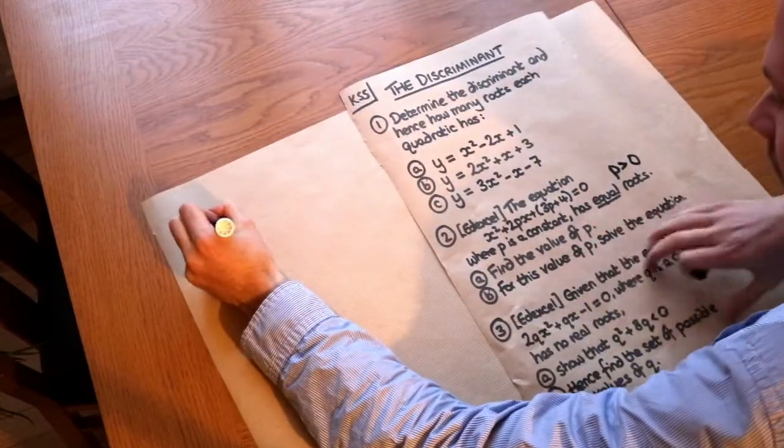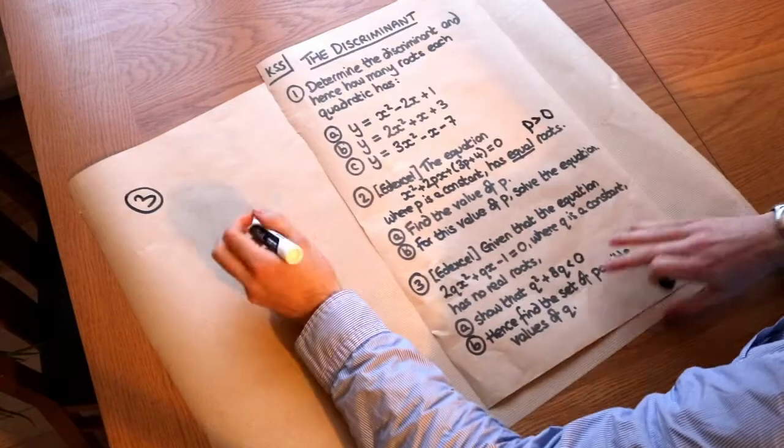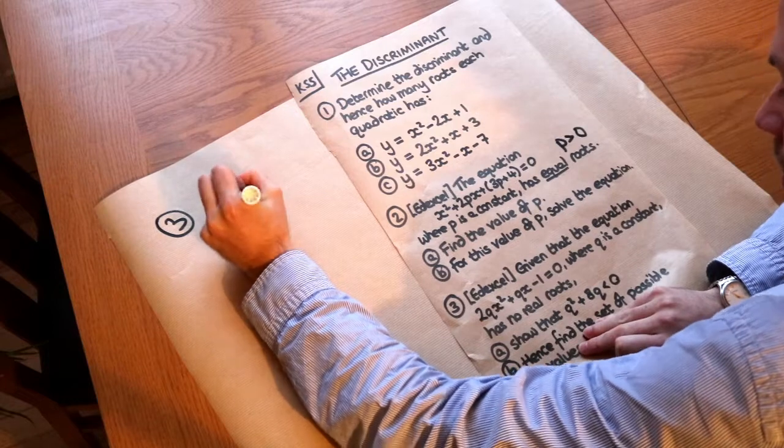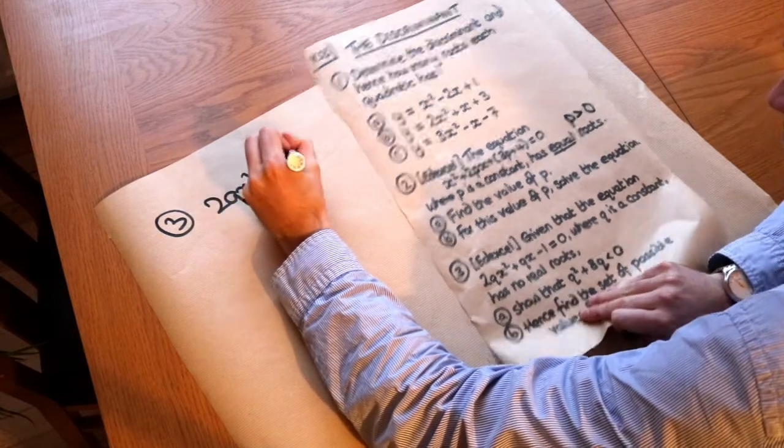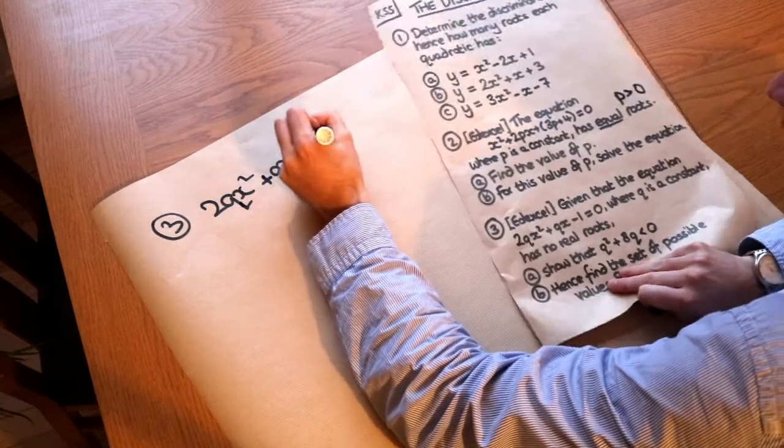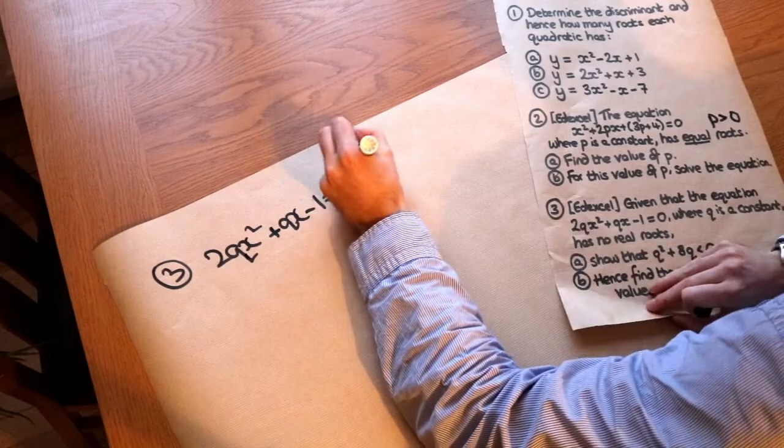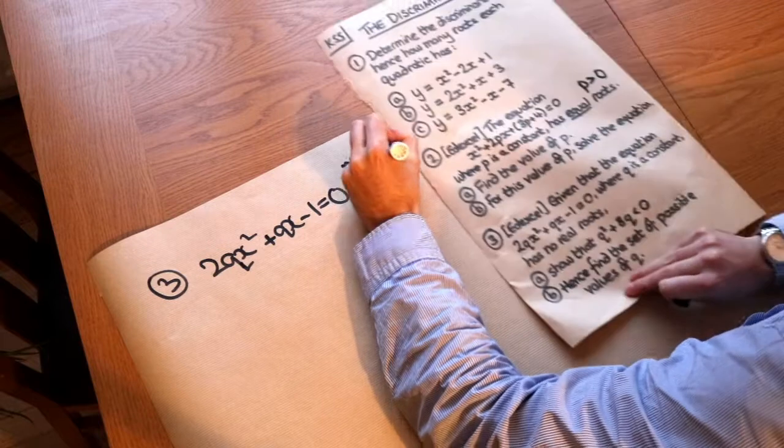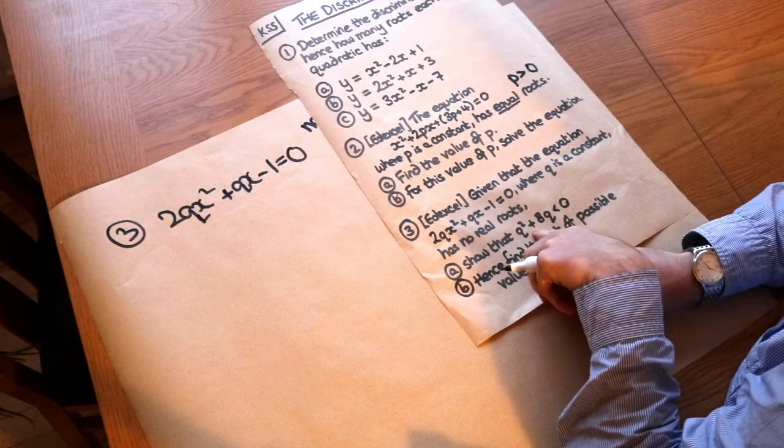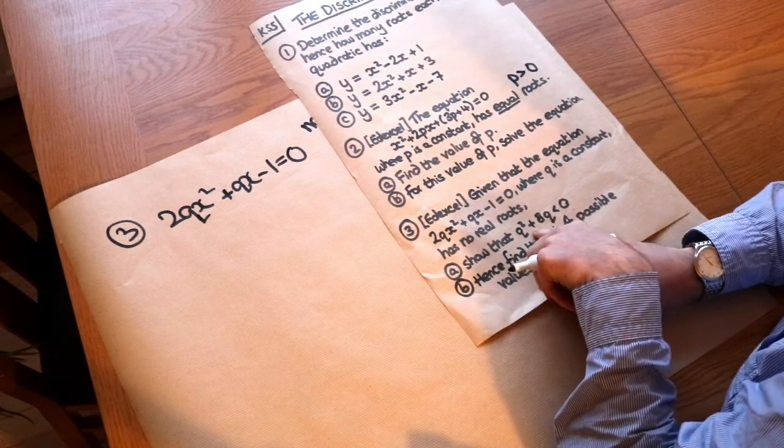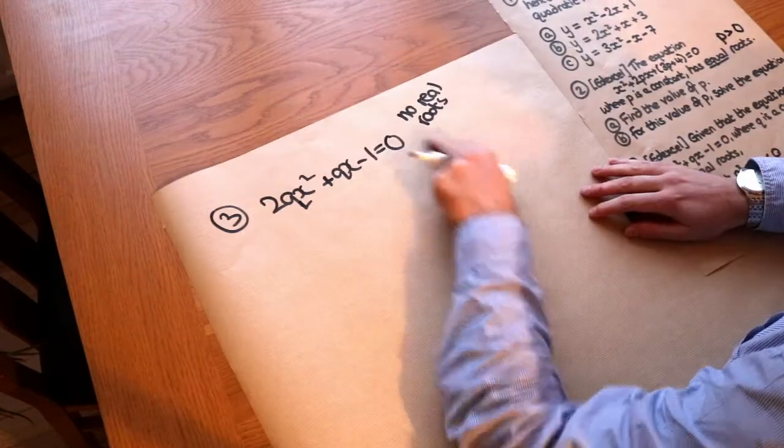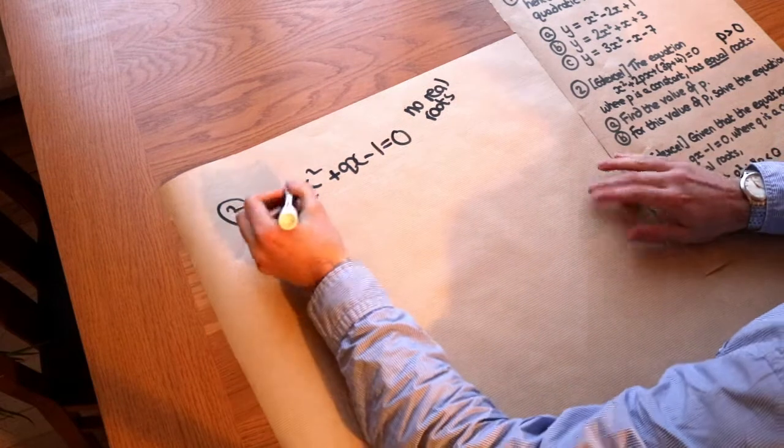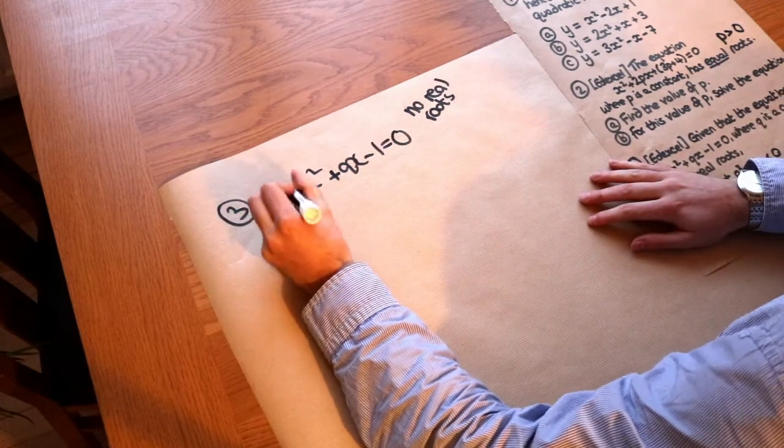And then finally, this exam question again, question 3: given that the equation 2qx² + qx - 1 = 0, and we're saying this has no real roots. We want to show that we end up with this quadratic inequality here: q² + 8q < 0. So whenever it talks about the number of roots, we know we have to use a discriminant.